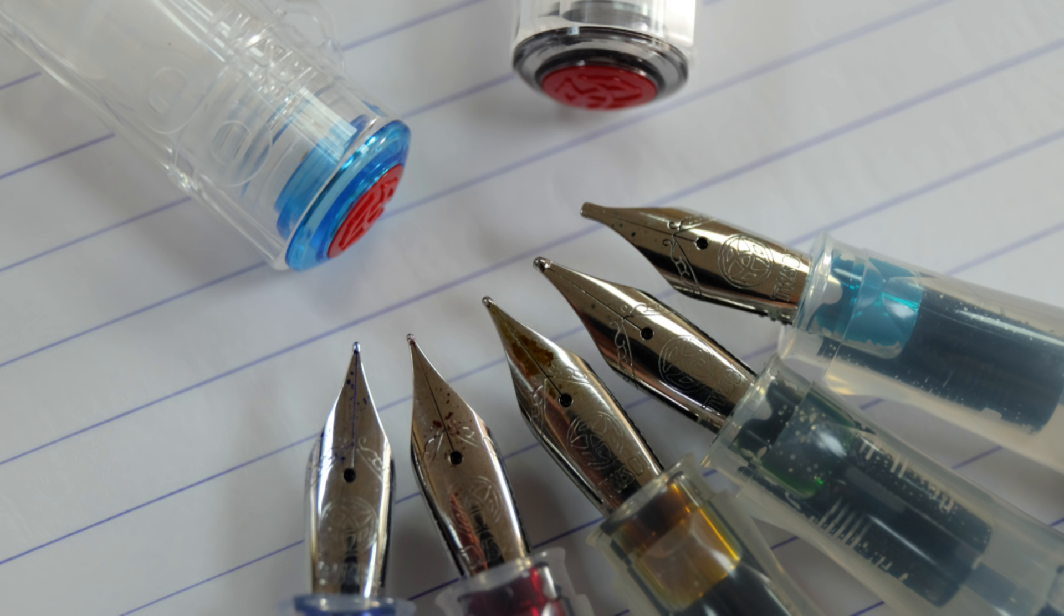The GO is available with five nib options, so it starts at extra fine, then fine, then medium and broad, and then they do a 1.1mm italic stub.